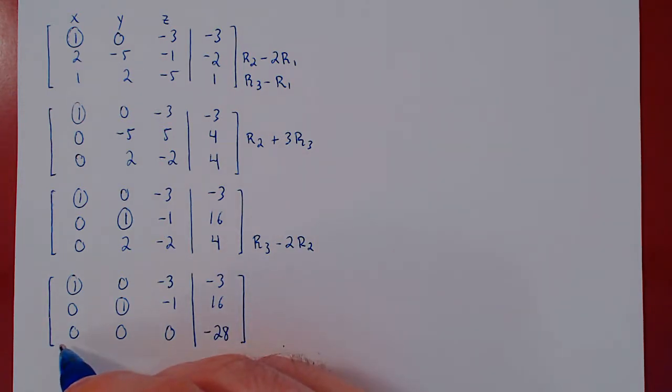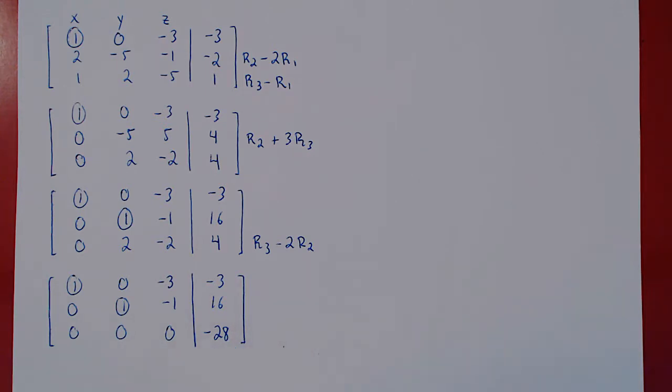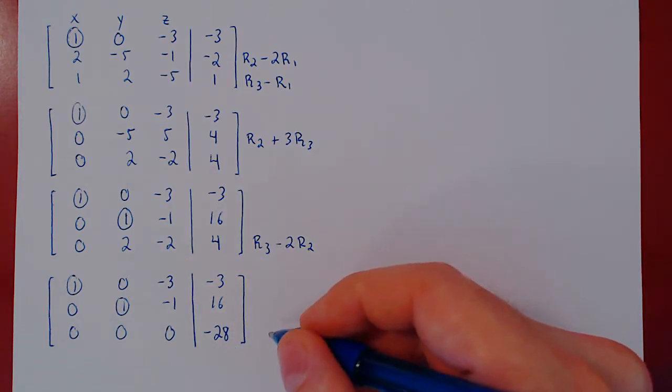And now if you notice, the third row is all 0s. But the constant term isn't 0. And I claim this is interesting. Why is this interesting? And this is something that you always have to watch for. A row where all the coefficients are 0, but the constant term is not 0.